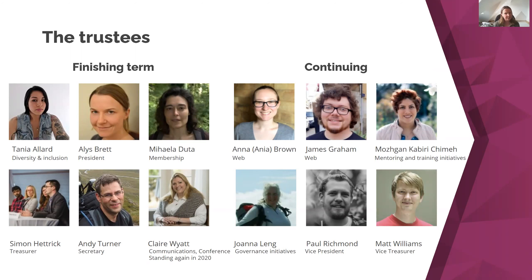Of these trustees, the six people on the left of this slide are people who were founding trustees from the year before, or in some cases longer. Those people are finishing their two-year term. We've moved to two-year terms, but for the first year we had a one-year term for previous trustees to establish a staggered system of electing six of the 12 trustee places every year. Tanya, me, Michaela, Simon, Andy, and Claire are finishing their terms. Anya, James, Mojgan, Joe, Paul, and Matt were elected last year and will be continuing without re-election.